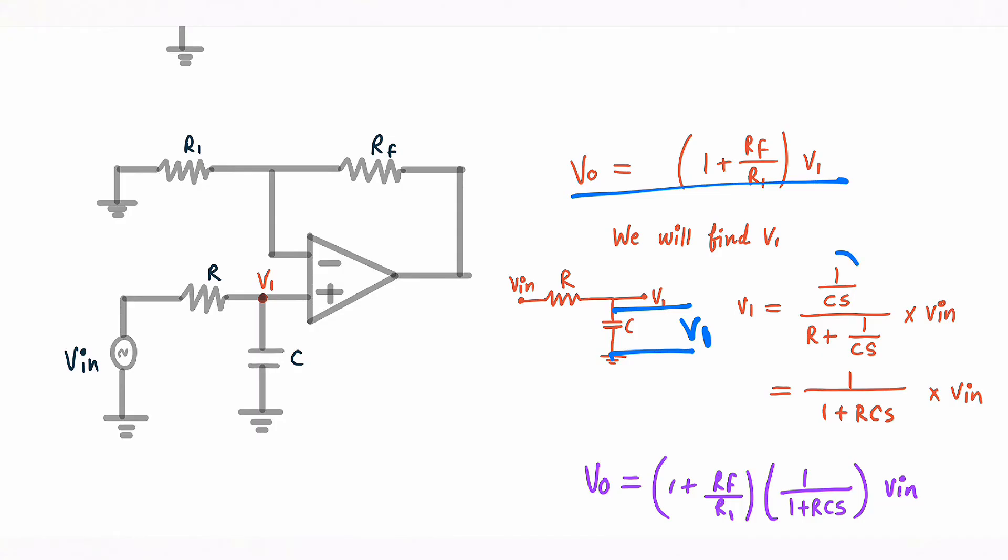V1 is voltage across this capacitor. I am just using voltage divider rule. I have to find the voltage across impedance 1 upon Cs, so I wrote it in numerator and the total impedance is R plus 1 upon Cs. And into the input voltage Vin, so our equation is 1 upon 1 plus RCs into Vin after simplification.